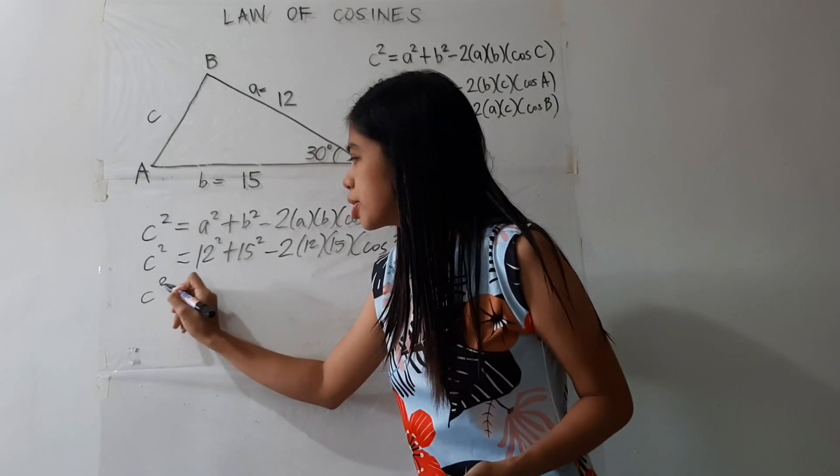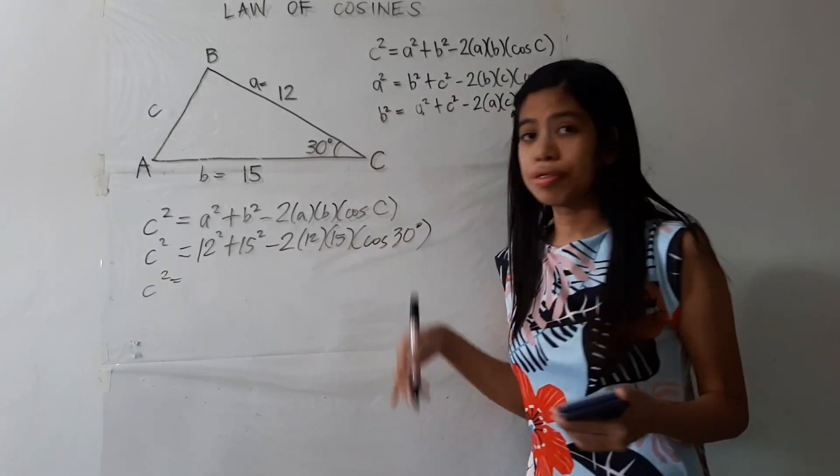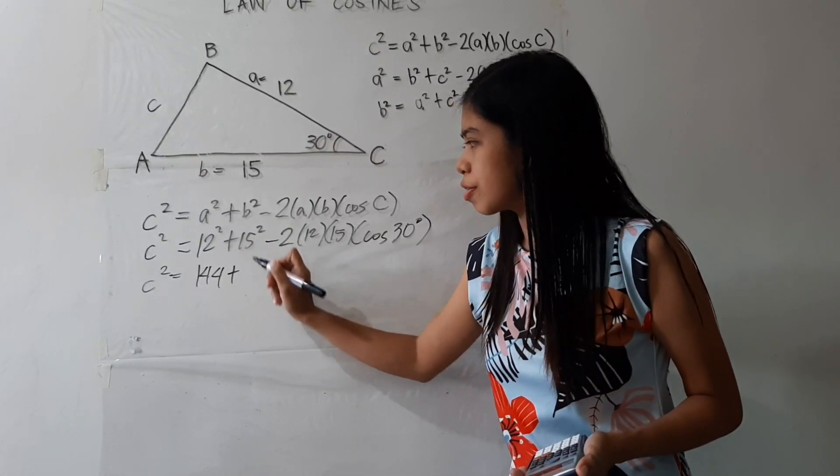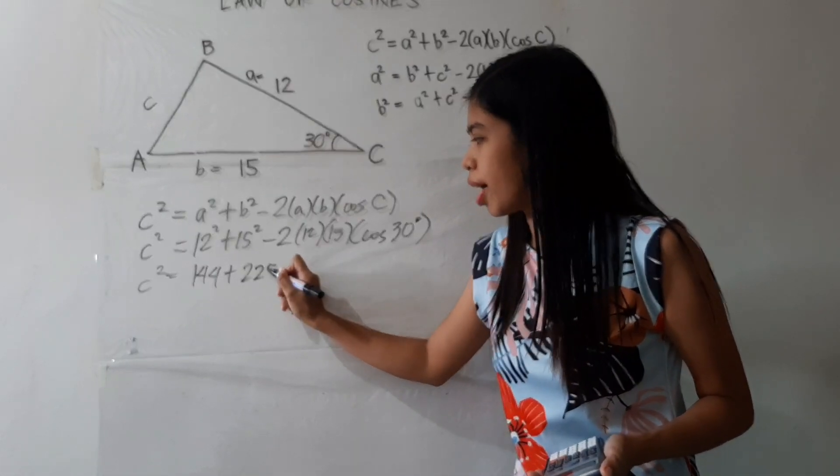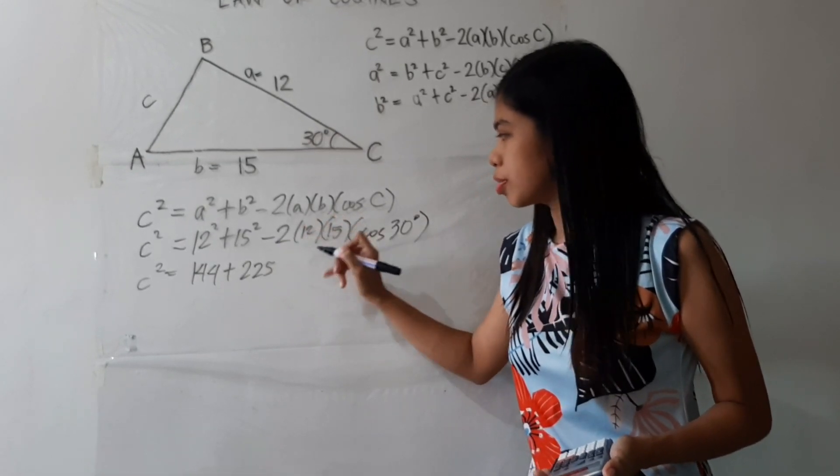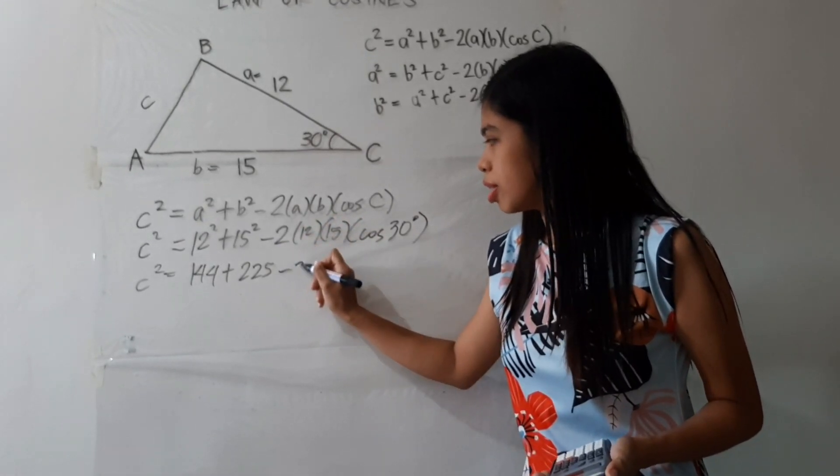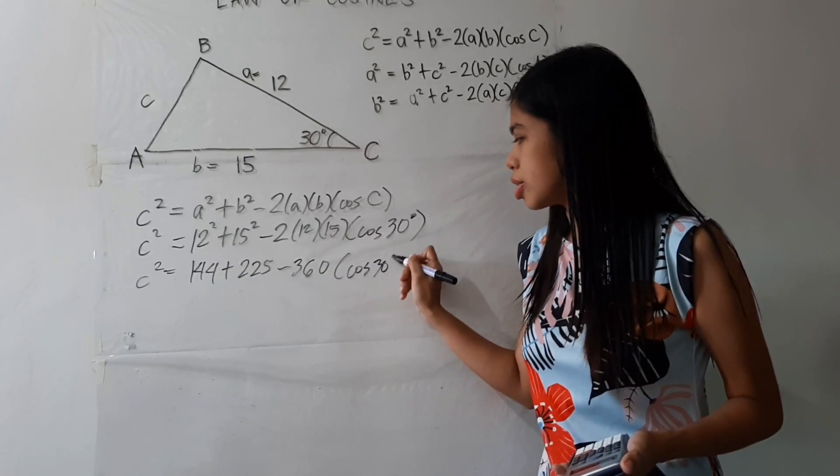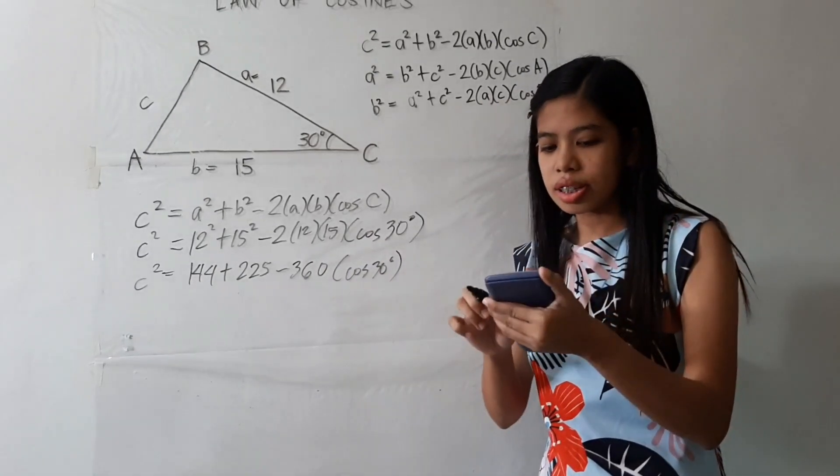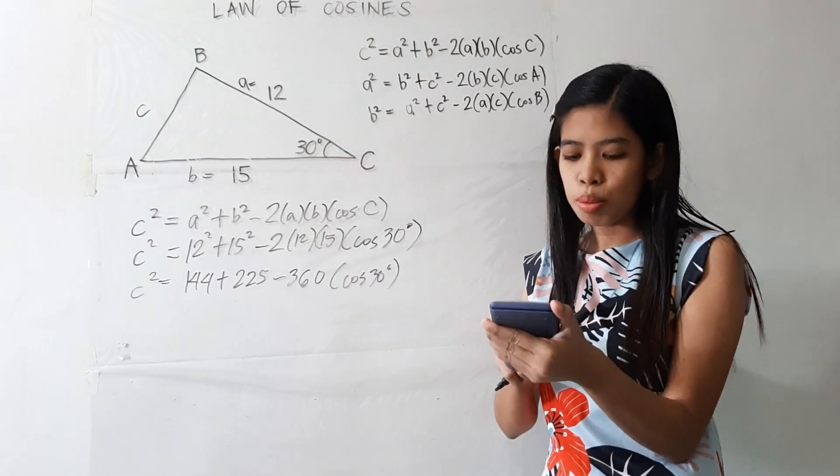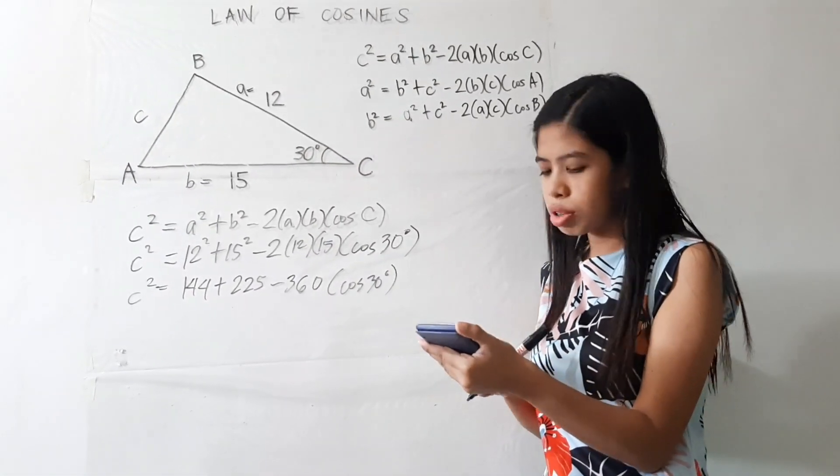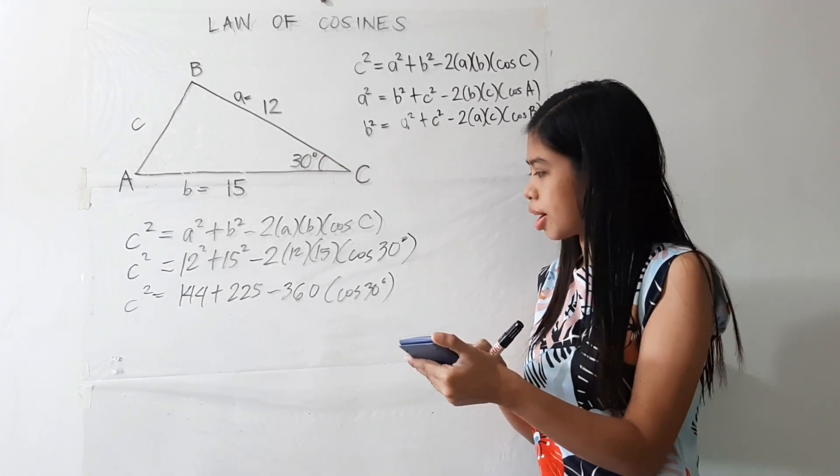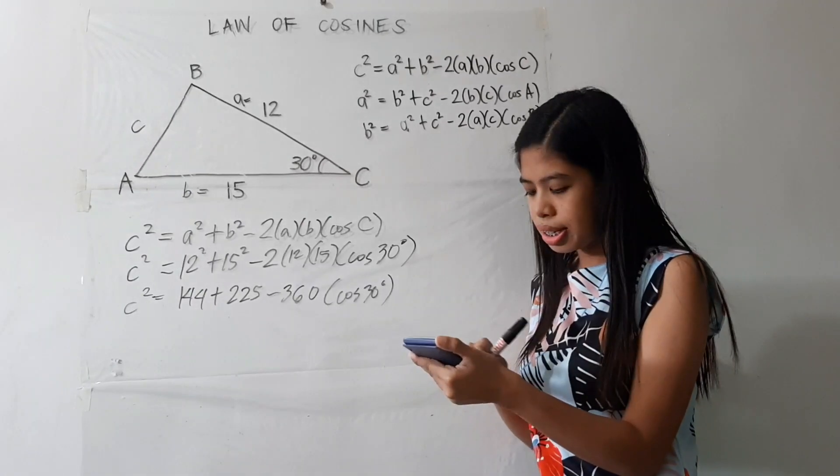So for you to get it easier using the calculator, you may just press 144 plus 225 minus 360 times the cosine of 30 degrees, that would be equal to 57.230 and so on.